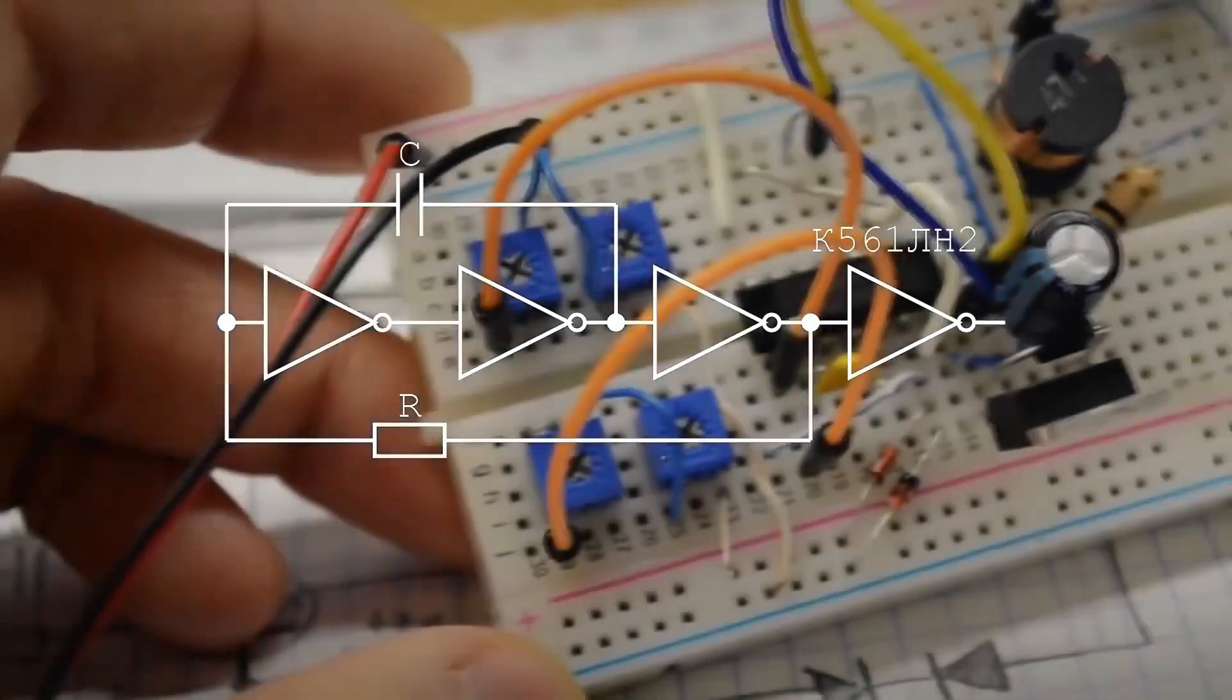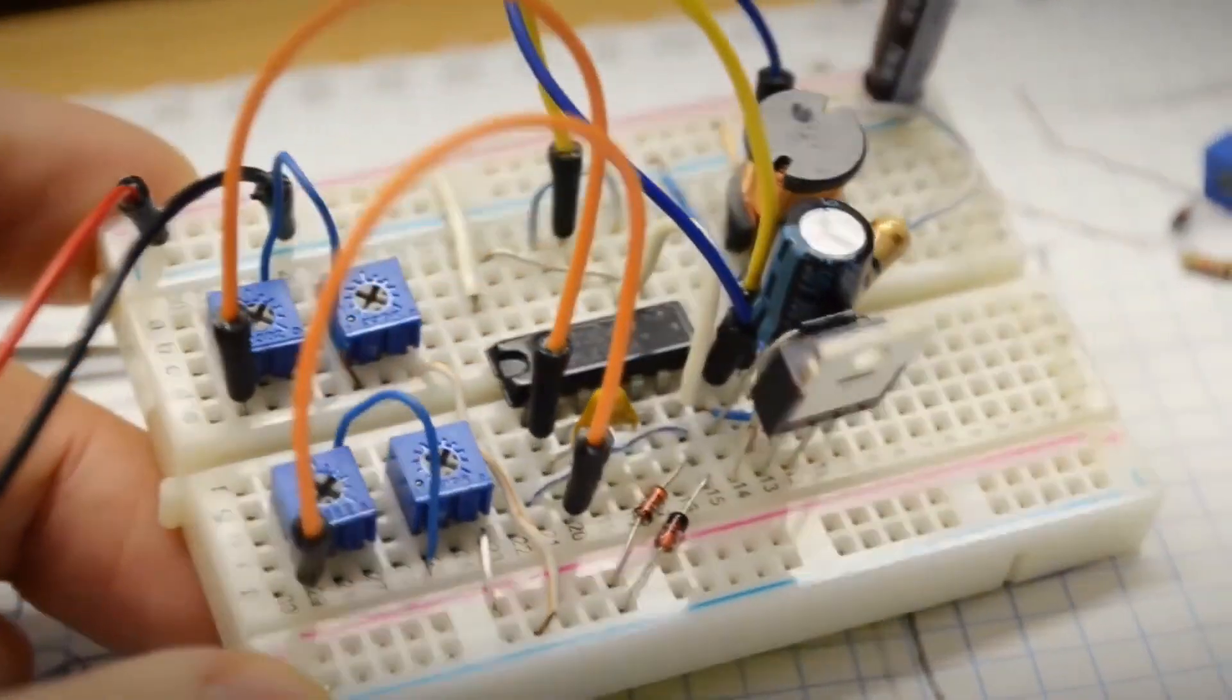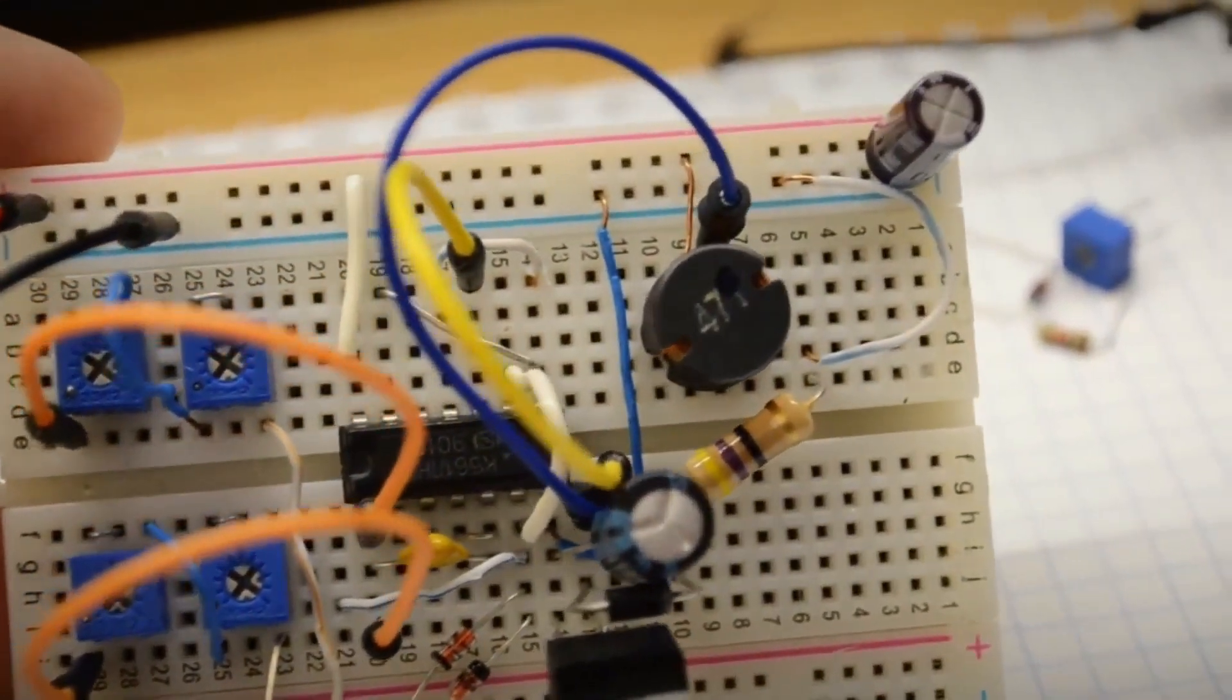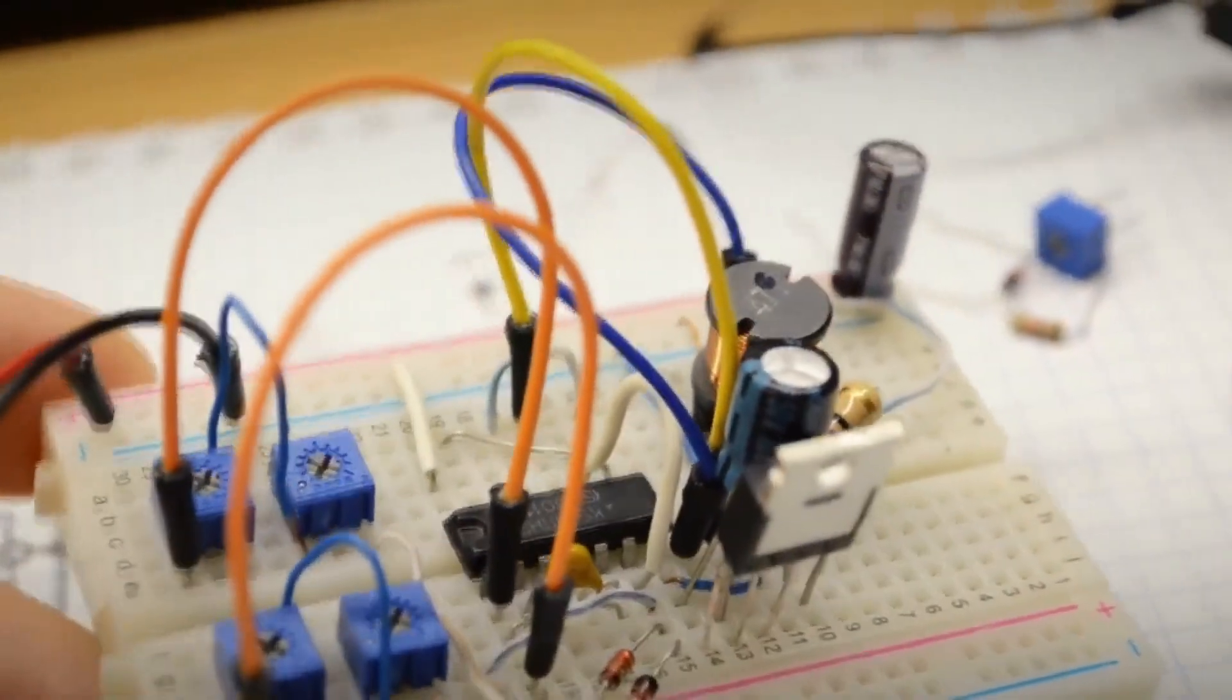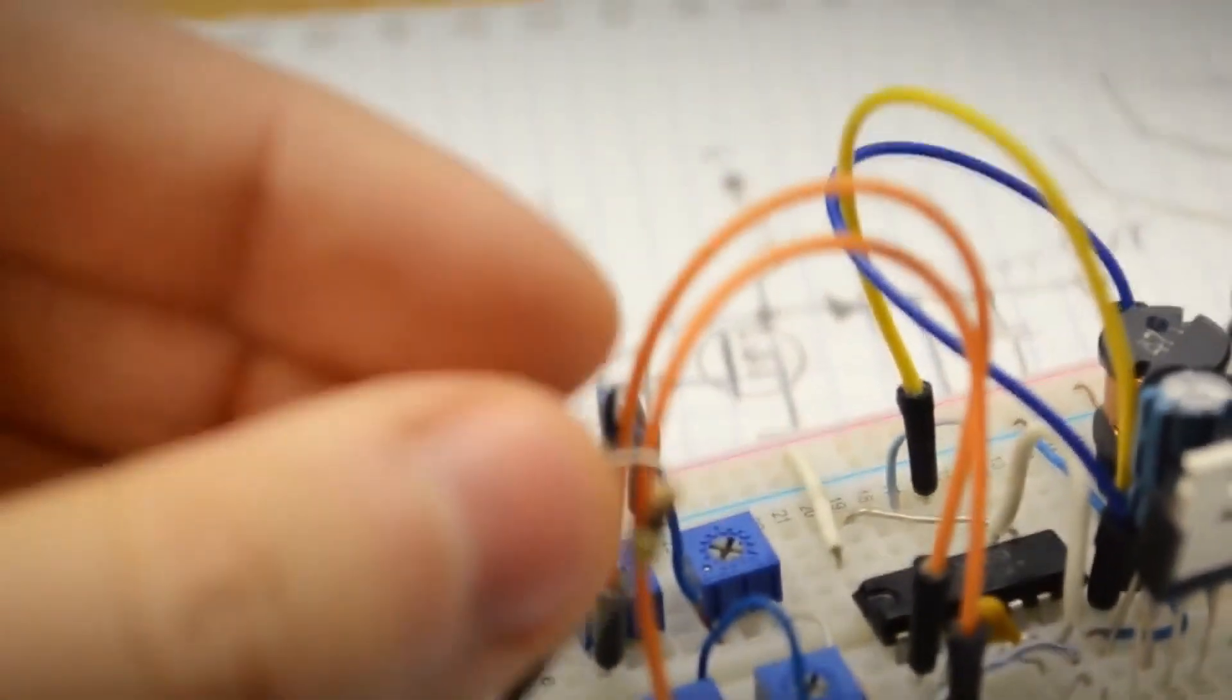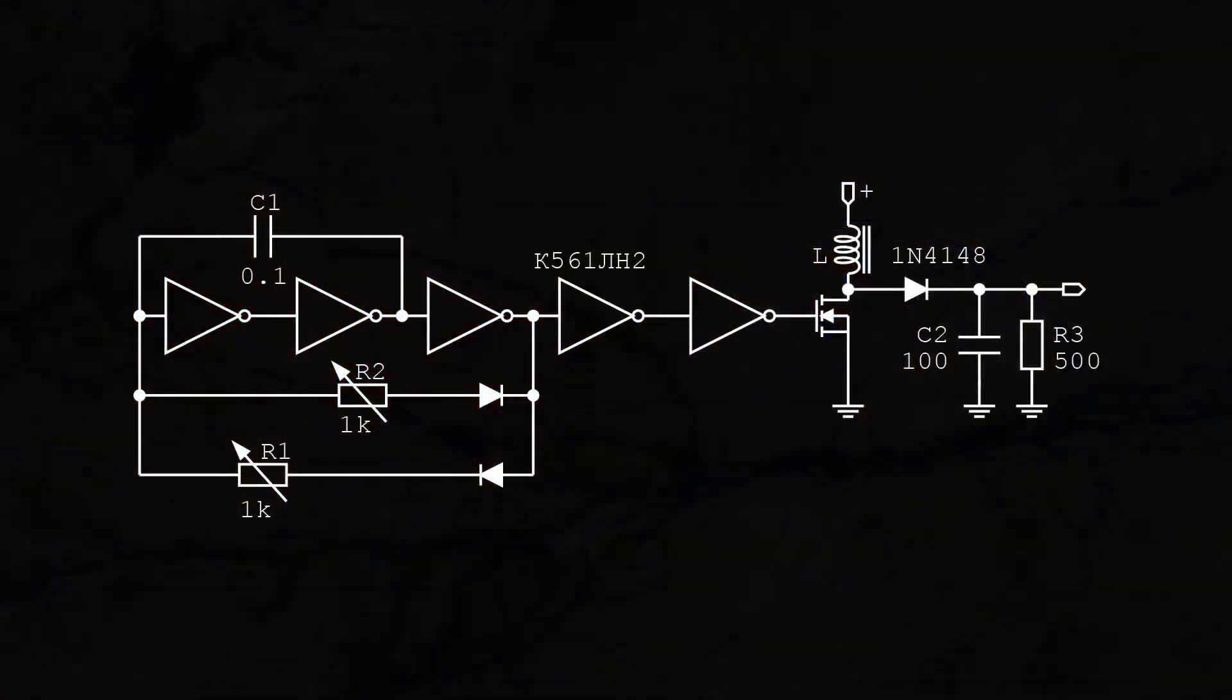In this form, we conditionally get a square wave, meaning the charging time of the capacitor is equal to the discharging time. Let's add the ability to adjust the high and low level time separately. For this, we install two potentiometers and two diodes. We add an output stage and try to turn it on and look at it with an oscilloscope to see how it all looks.